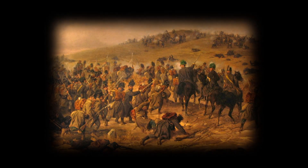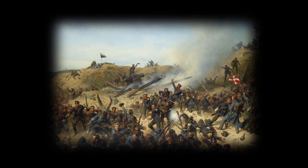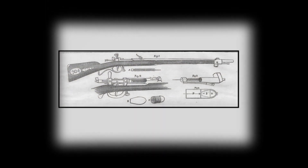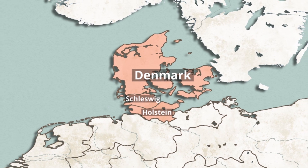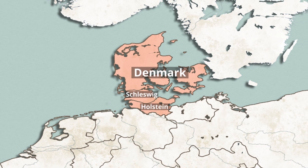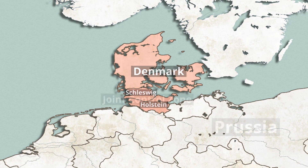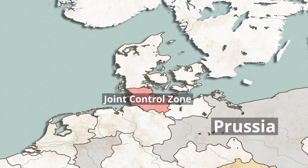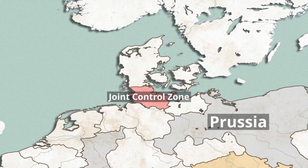On February 1st, 1864, Prussian and Austrian troops crossed the Eider River, initiating the Second Schleswig War. The Danes attempted to defend their country, but they were no match for the modern armaments of the combined Prussian and Austrian forces. The Prussians' use of the needle gun, a bolt-action rifle that allowed rapid fire while laying prone, gave them a significant advantage in combat. The war resulted in a quick victory for the combined Prussian and Austrian armies, and in the Peace of Vienna, both countries split control of Schleswig and Holstein.